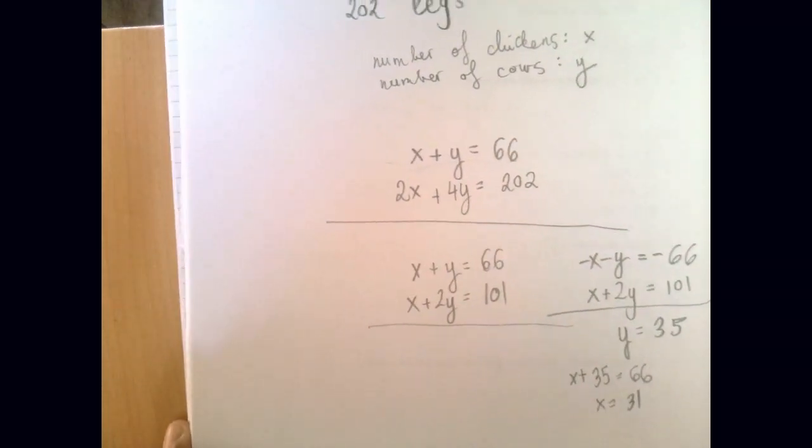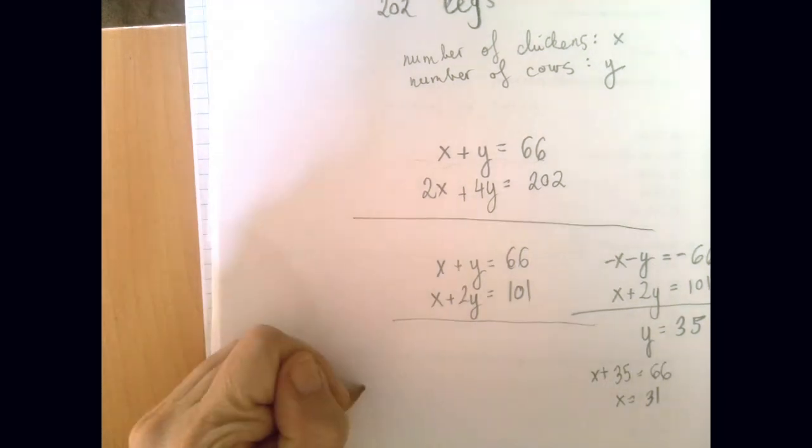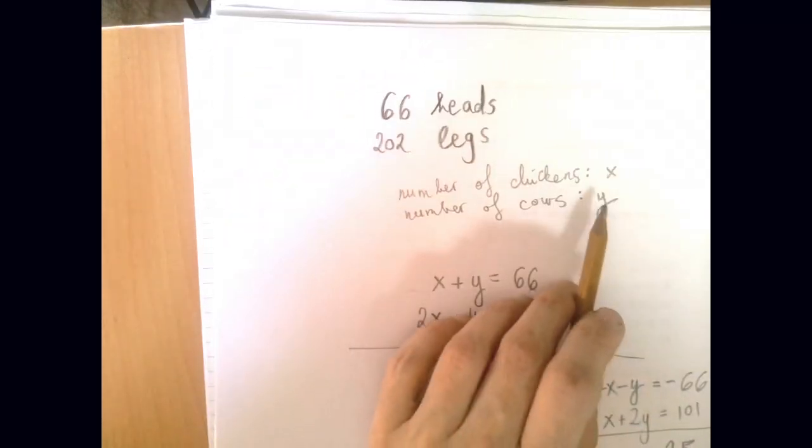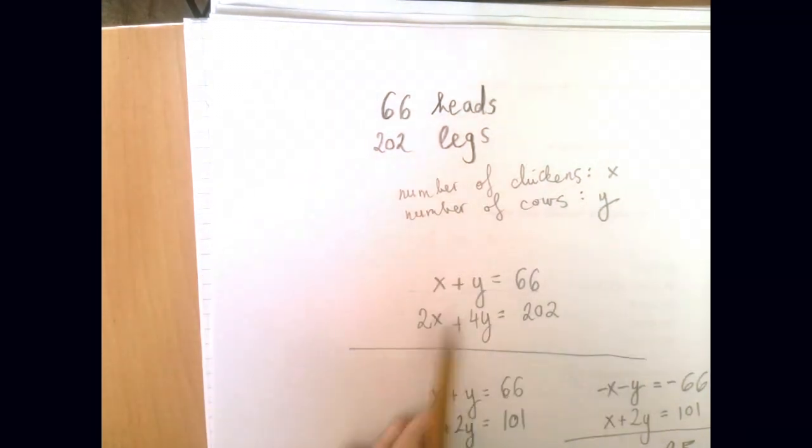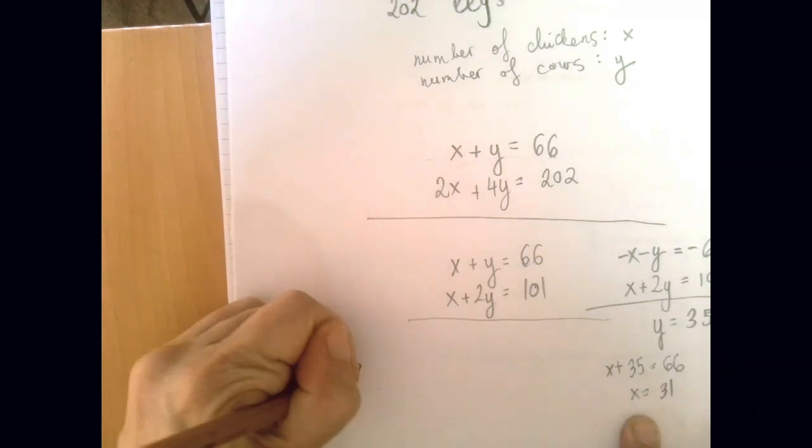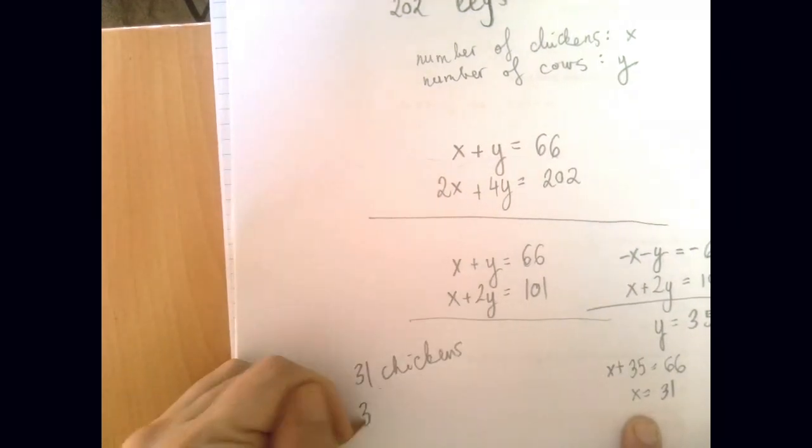So our answer is, we think that there are, x was the number of chickens. You should write that down. Otherwise you will have to browse your own equations to know what you call what. So we have 31 chickens and 35 cows.